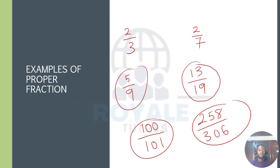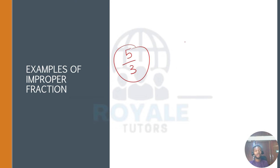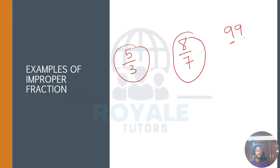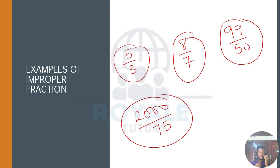Examples of improper fractions. We have improper fractions such that the numerator is bigger than the denominator. If you have 5 over 3, this is improper. If you have 8 over 7, this is an improper fraction. If you have 99 over 50, this is an improper fraction. You may even have a very big number — 2000 over 75 is an improper fraction. You can pause the video and add other examples to generate more improper fractions.